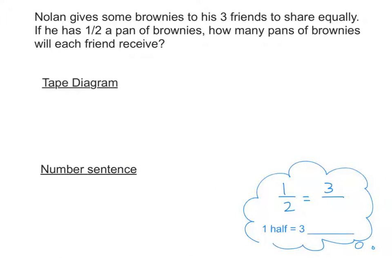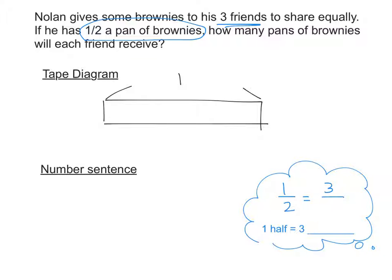Nolan still has three friends, but this time he only has half a pan of brownies. We're figuring out how many pans each person gets. For the tape diagram, he doesn't have a full pan — only one half. We cross out the other part. Since he only has half a pan, we divide that half into thirds. Dividing the rest into thirds too so we can see the fraction — one piece is one out of a total of six sections. Each friend will get one sixth of a pan.